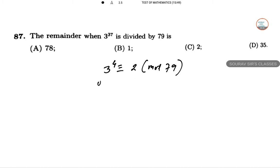Then 3 to the power 4 times 9, so 4 times 9 is 36. This gives 2 to the power 9 modulo 79. So 3 to the power 37 becomes 2 to the power 9 times 3 modulo 79.